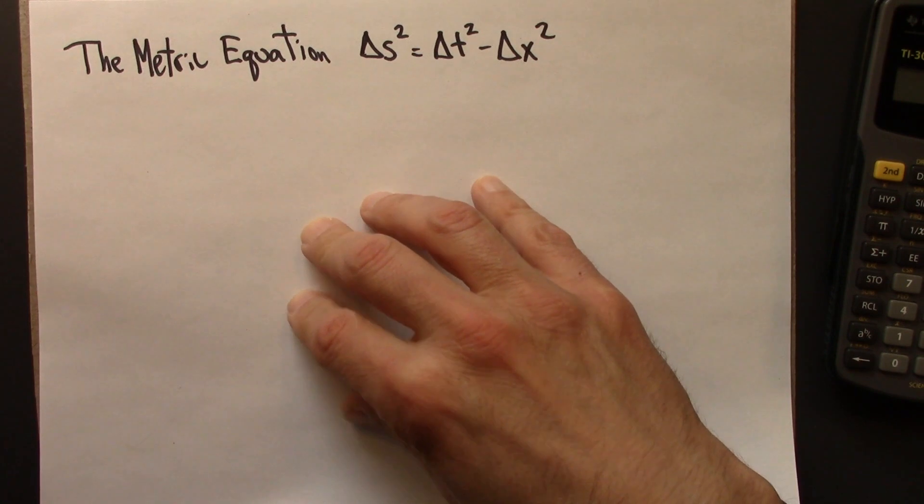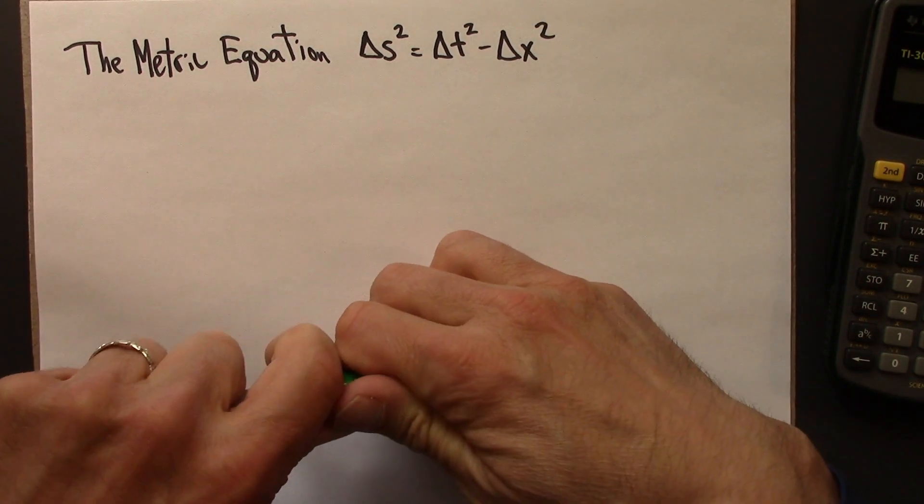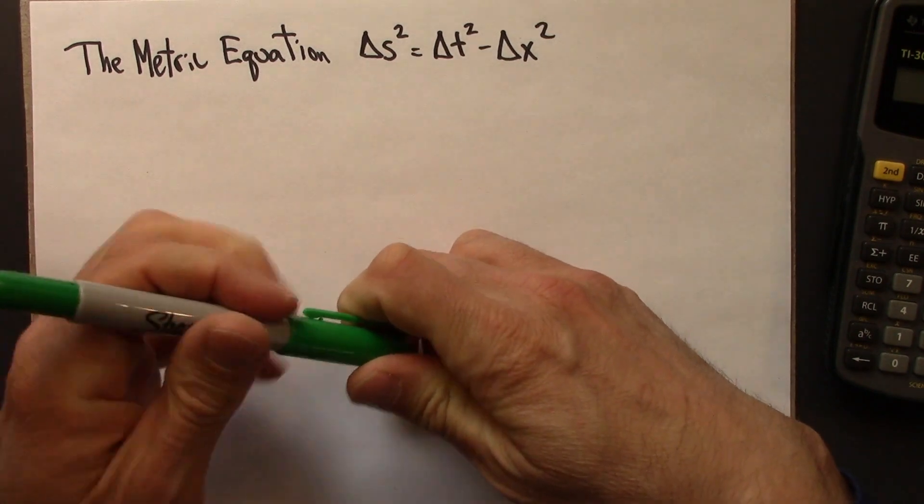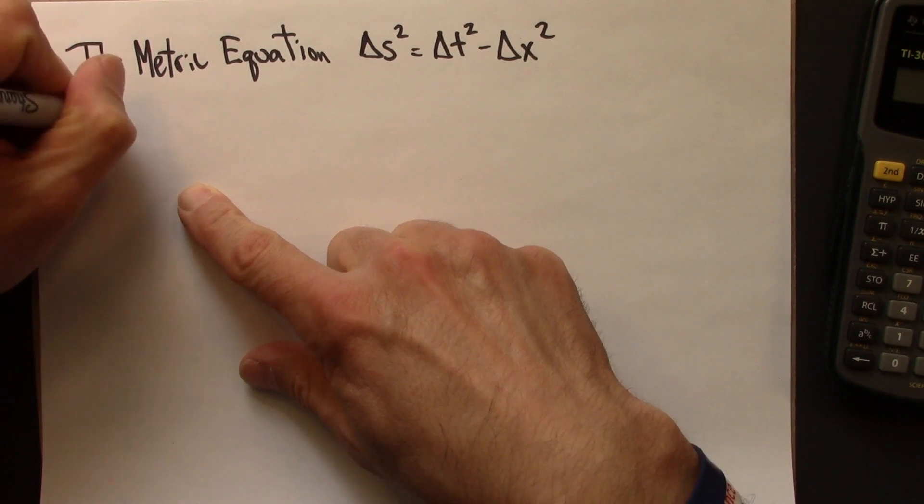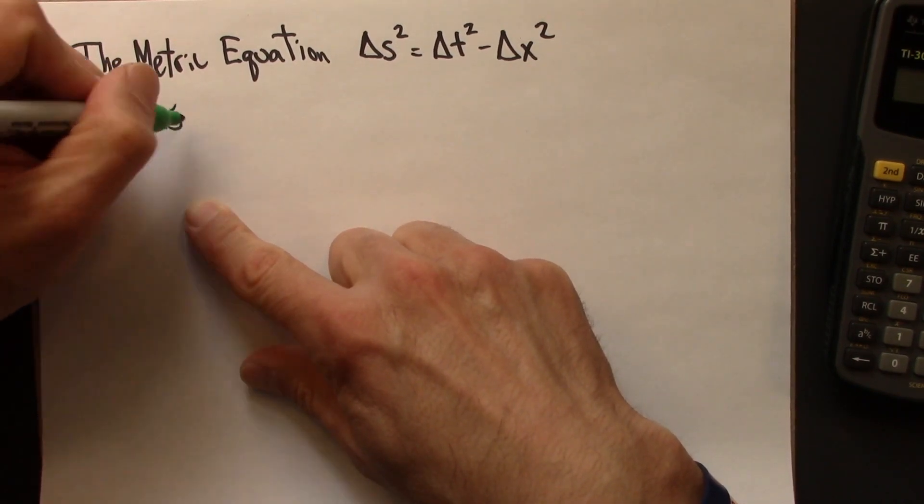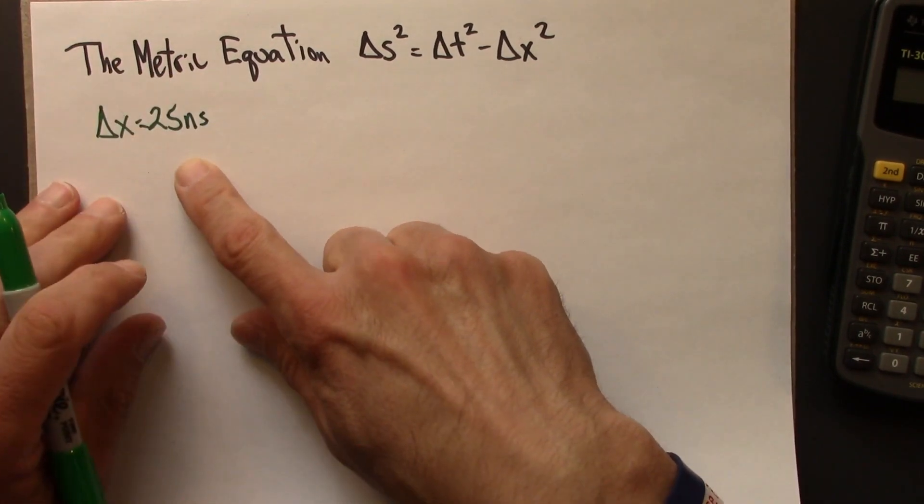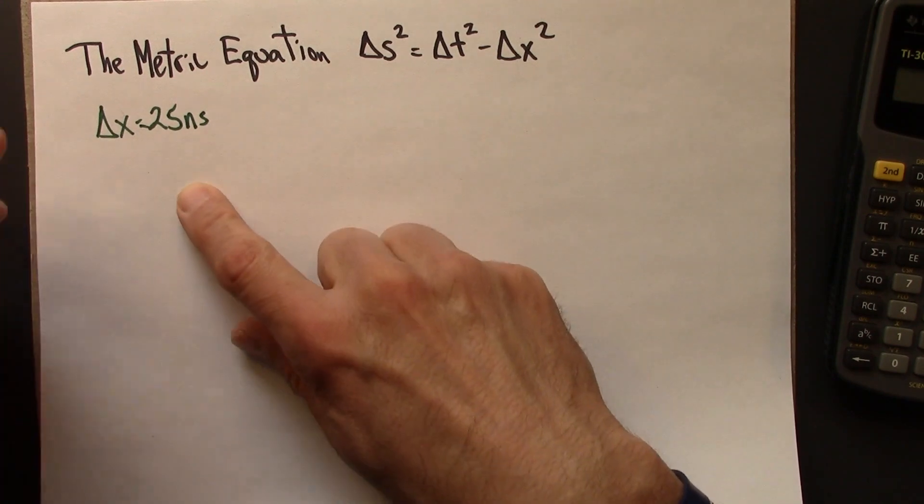So let's start by writing down what we know. We have two events, these two firecracker explosions. In our frame, we see a delta x of 25 nanoseconds, because the problem tells us that it explodes 25 nanoseconds away.